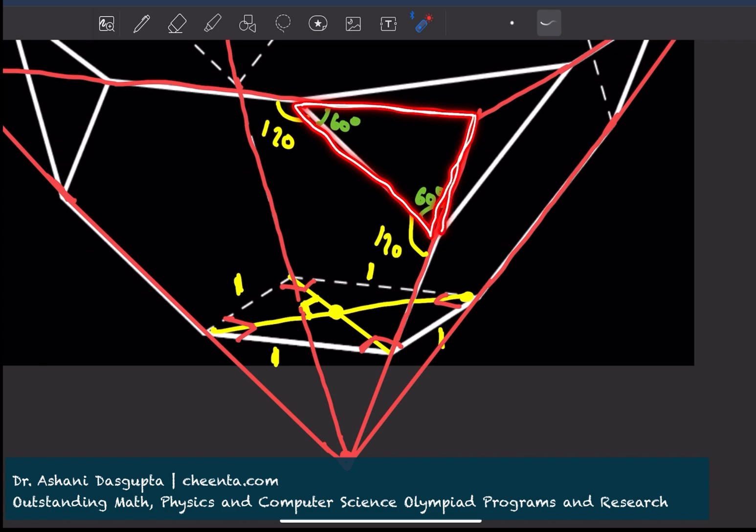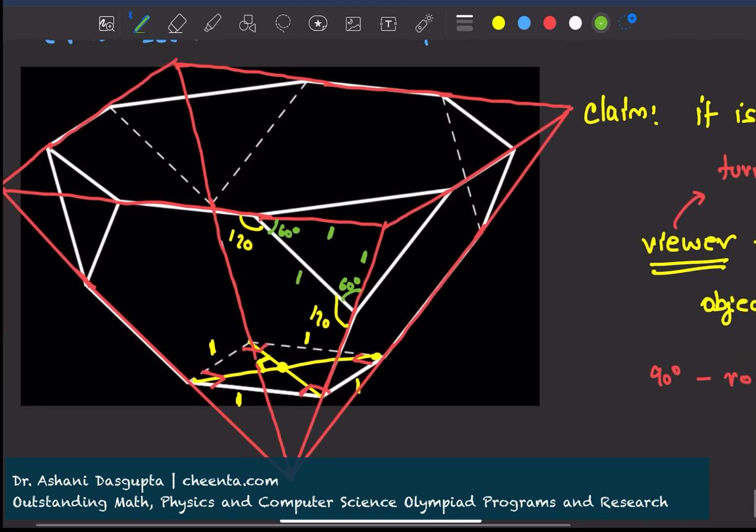This is an equilateral triangle. This is 1 means these two sides are also 1. Similarly, this side is 1.